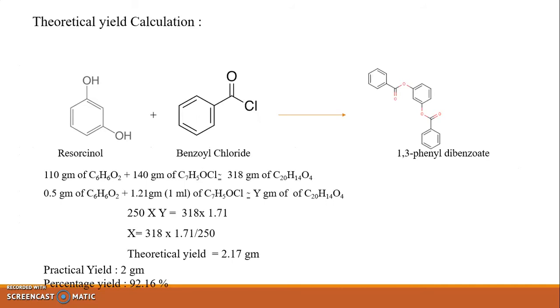There is the calculation part for this practical. This is the reaction involved. When resorcinol reacts with benzoyl chloride in presence of sodium hydroxide to give 1,3-phenyl dibenzoate. When 110 gram of C6H6O2, the molecular formula of resorcinol, is reacted with 140 gram of benzoyl chloride, it is equivalent to 318 gram of 1,3-phenyl dibenzoate. We are taking 0.5 gram of resorcinol and 1.21 gram or 1 ml of benzoyl chloride to give y gram of 1,3-phenyl dibenzoate.